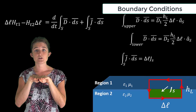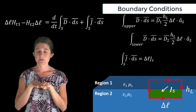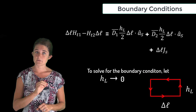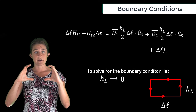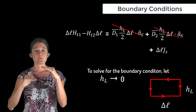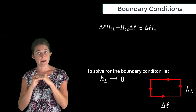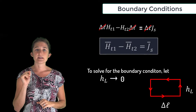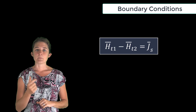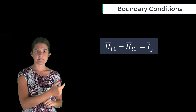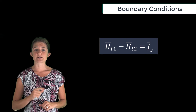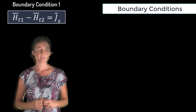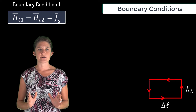To get the equation for the boundary itself, we let HL — the height of the loop — go to zero. Both D field terms go away and the delta L terms cancel, giving us that the tangential magnetic field in the first region minus the tangential magnetic field in the second region equals the surface current density on the boundary. This is the first boundary condition.